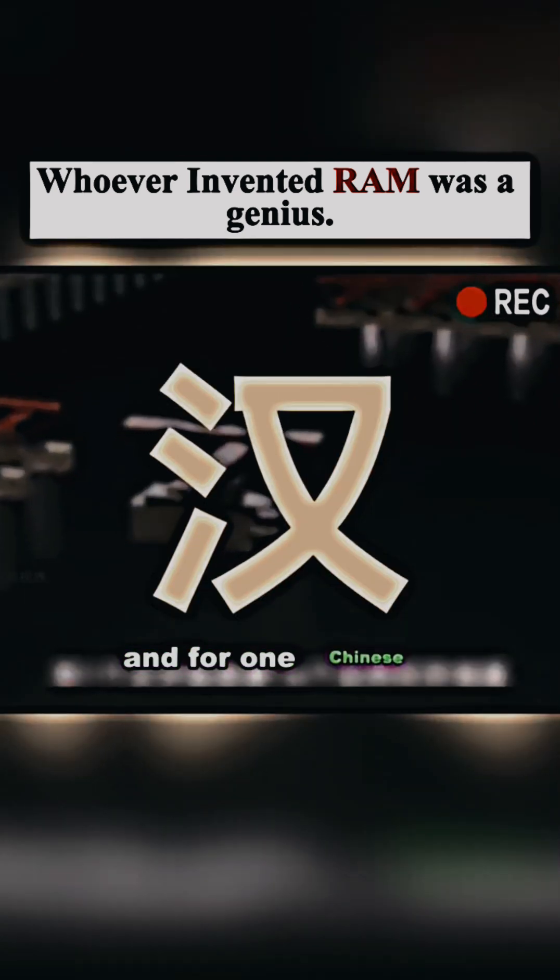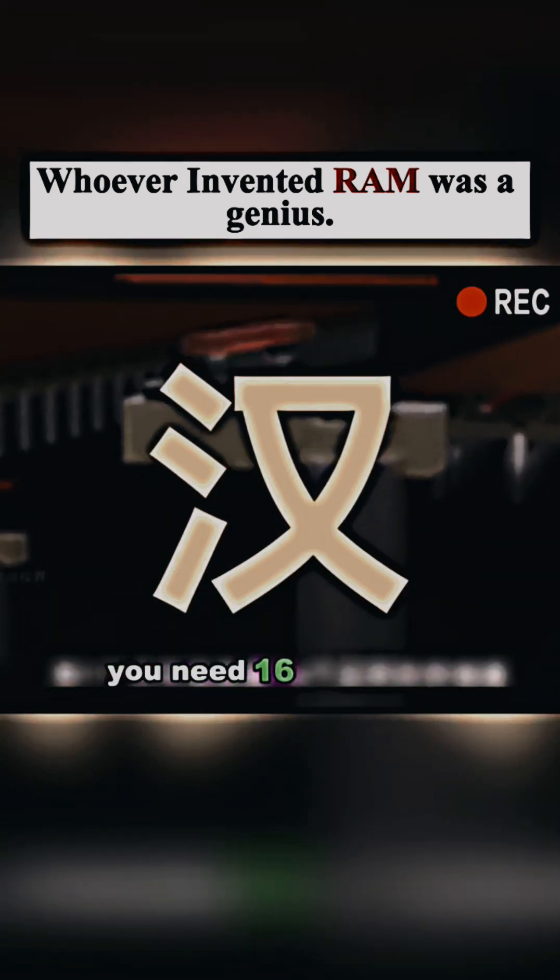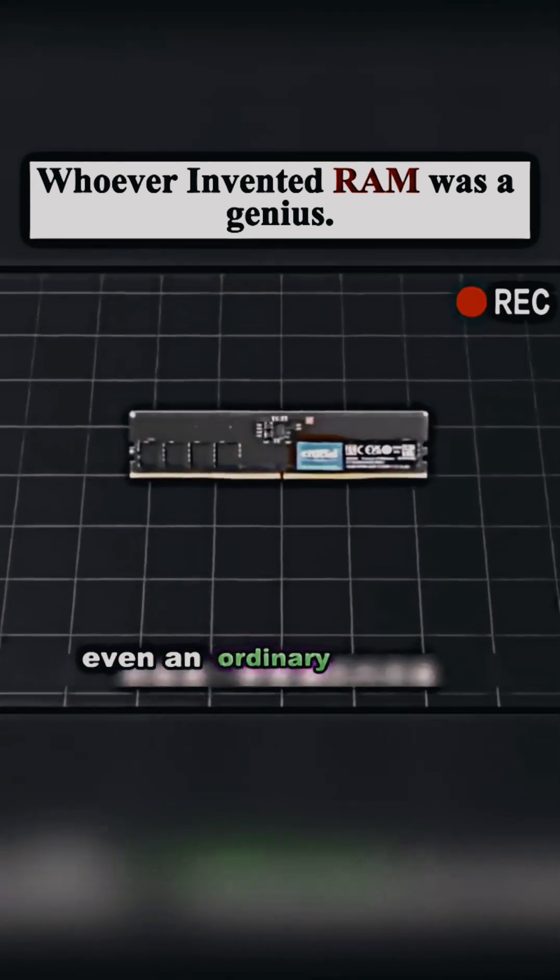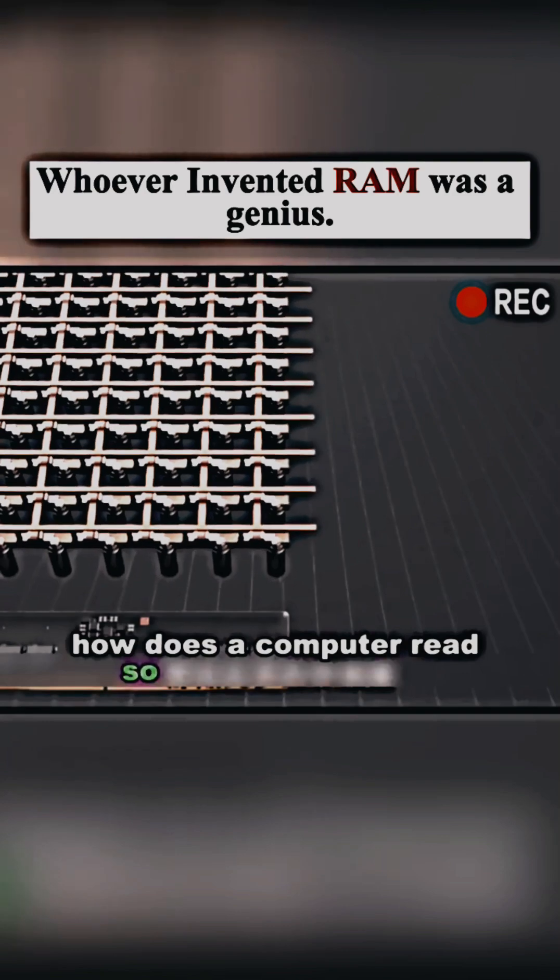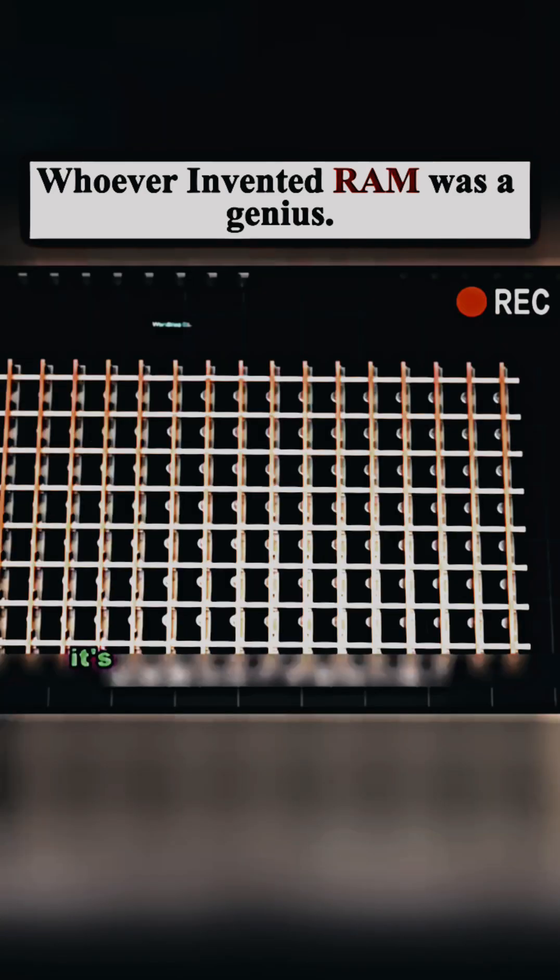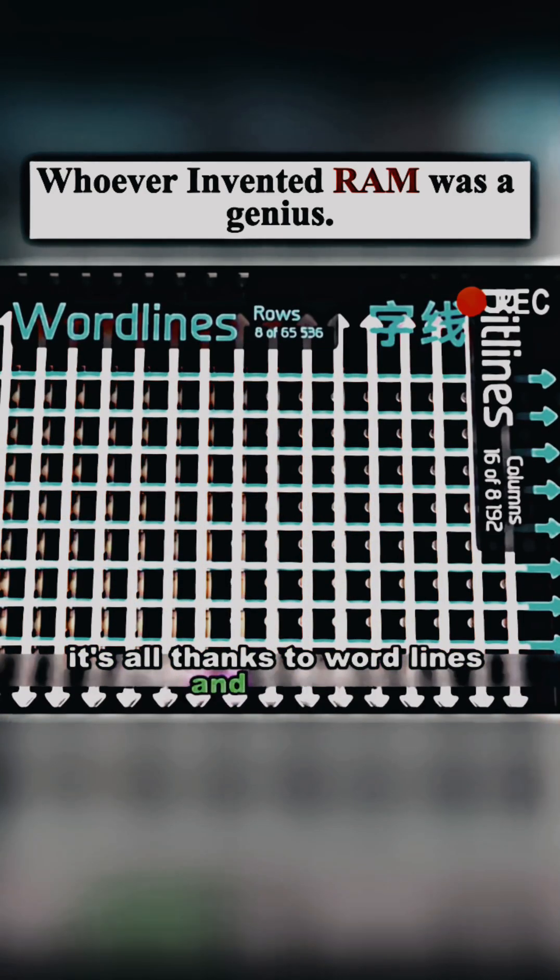And for one Chinese character, you need 16 memories. Even an ordinary memory stick can have tens of billions of memories. How does a computer read so much memory so accurately? It's all thanks to word lines and bit lines.